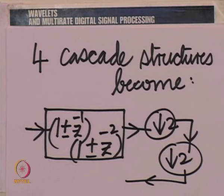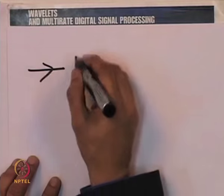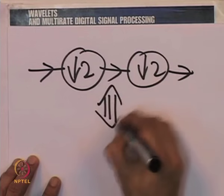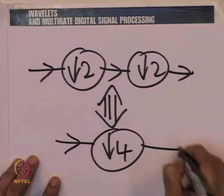Using the noble identity, we get (1 ± z⁻¹) times (1 ± z⁻²) followed by down sampling by 2 and down sampling by 2 again, giving z⁻² instead of z⁻¹ in the second filter. Down sampling by 2 twice is equivalent to down sampling by 4: the first down sampling takes every second sample, and the second again takes every second, so in effect you take every fourth sample. So down sample by 2 followed by down sample by 2 is equivalent to down sample by 4.